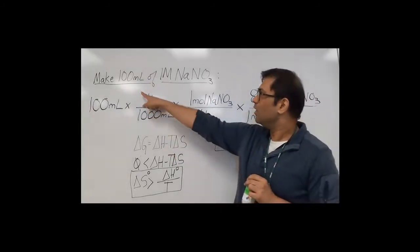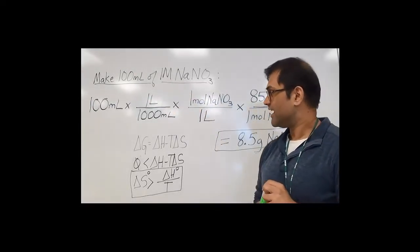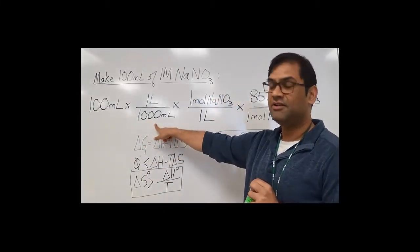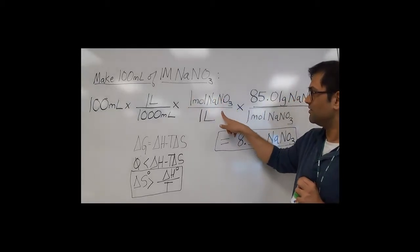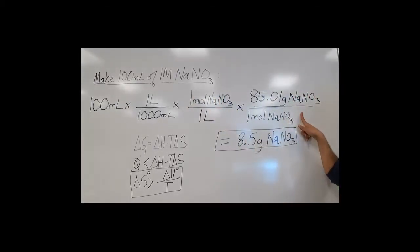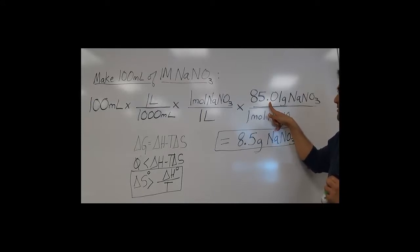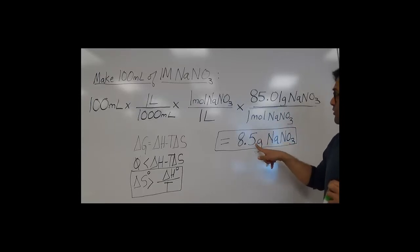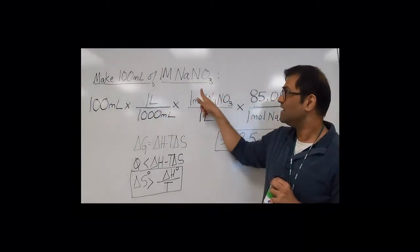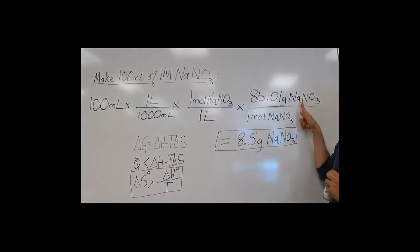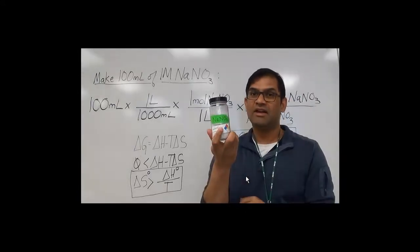The first thing in this lab we have to do is make 100 milliliters of sodium nitrate at a concentration of 1 molar. Here's the calculation: we take 100 mL, convert it to liters, multiply by 1 molar (moles per liter), and then multiply by the molecular weight. The molecular weight of NaNO3 is about 85.01 grams per mole. Doing this calculation, we get grams of sodium nitrate — about 8.5 grams.